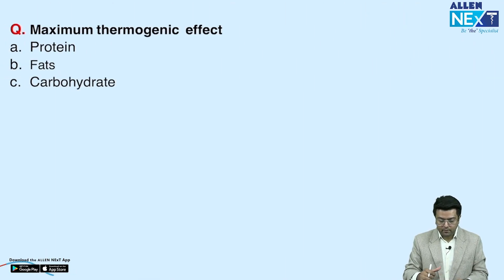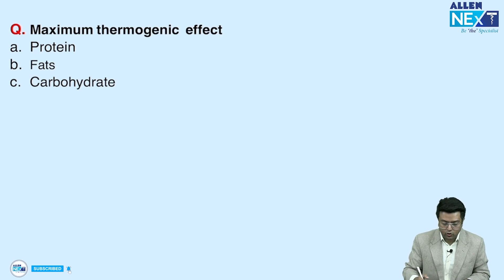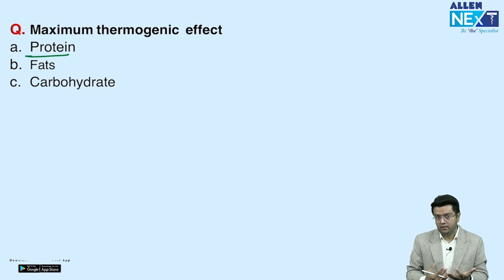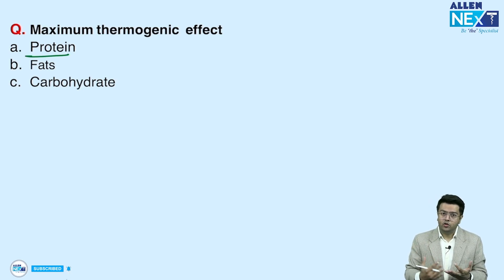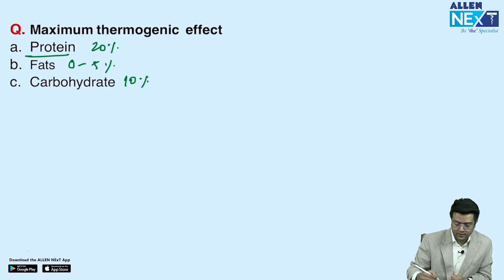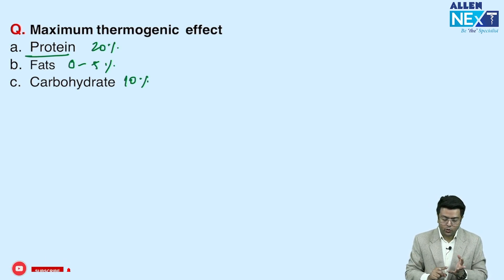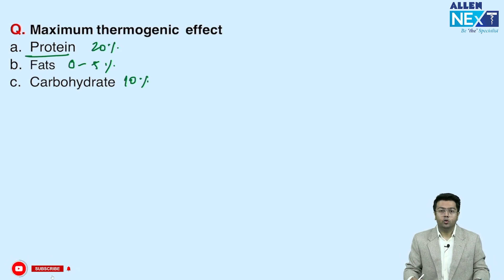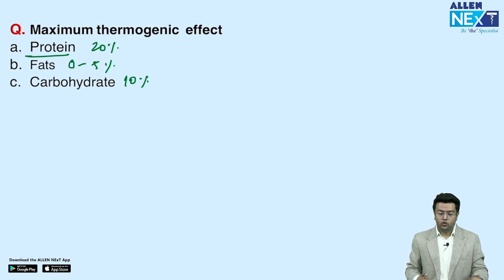The last question was about maximum thermogenic effect — a very easy and repeated question. Proteins have the maximum thermogenic effect, almost 20%. Fats and carbohydrates have about 5–10%, and the lowest is around 0–5%. If the sequence is asked, the order is protein, then carbohydrates, then fats. These were all the questions from this exam. Thank you so much for listening.